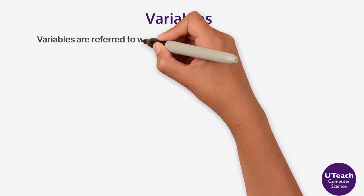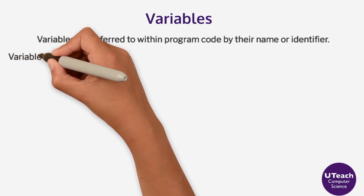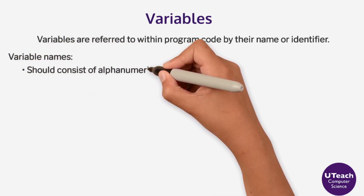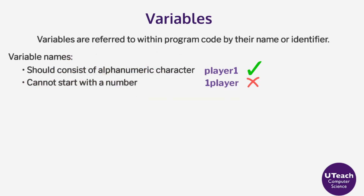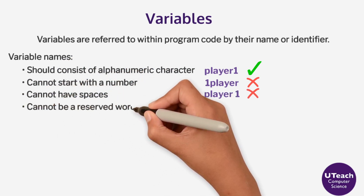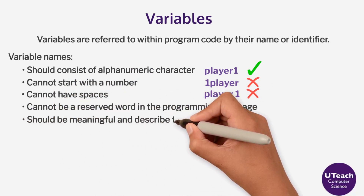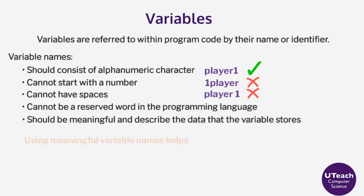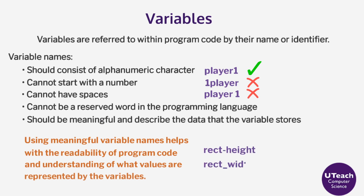Variables are referred to within program code by their name or identifier. Variable names should consist of alphanumeric characters, cannot start with a number, cannot have spaces, cannot be a reserved word in the programming language, and should be meaningful and describe the data that the variable stores. Using meaningful variable names helps with the readability of program code and understanding of what values are represented by the variables.